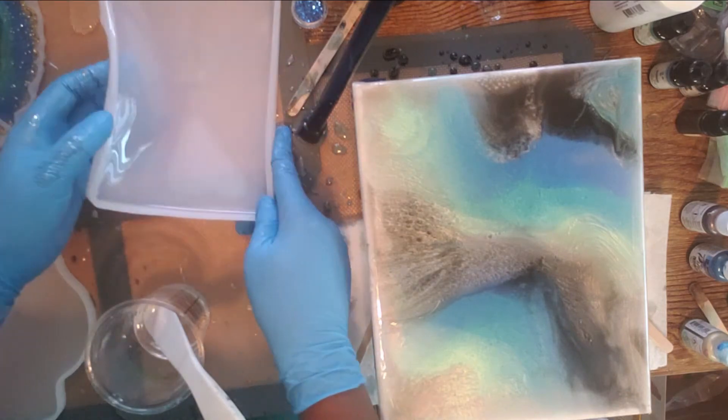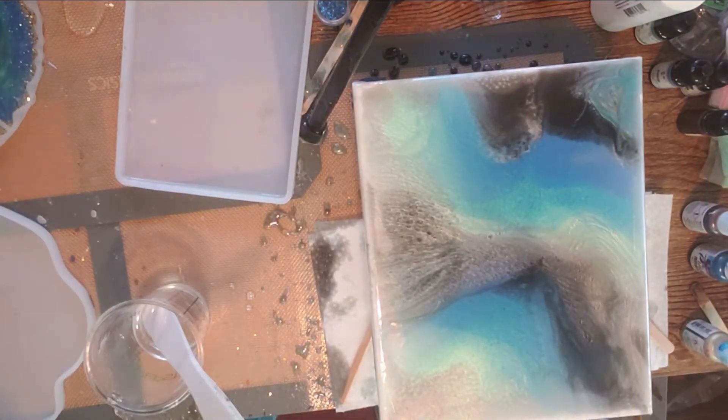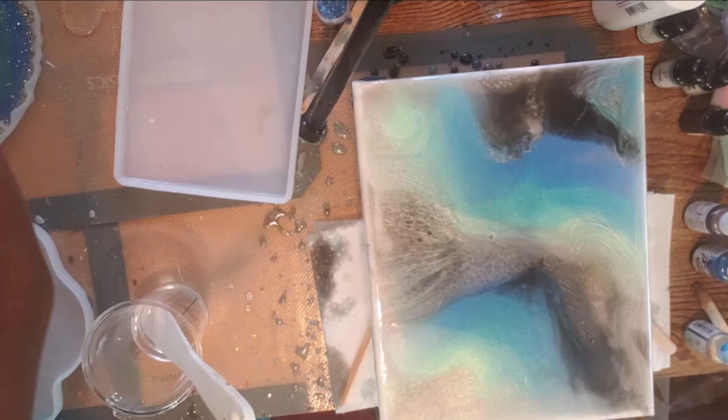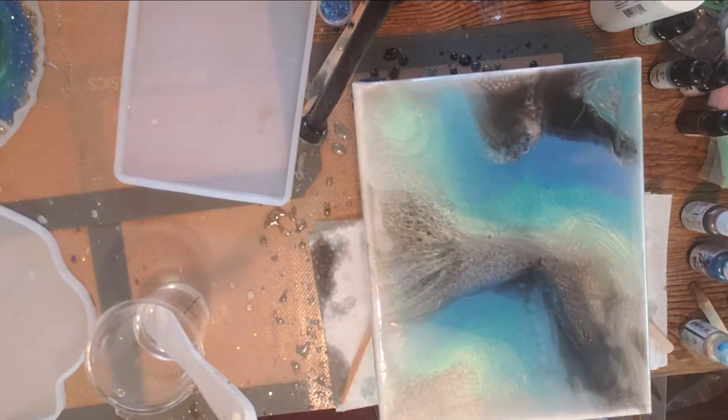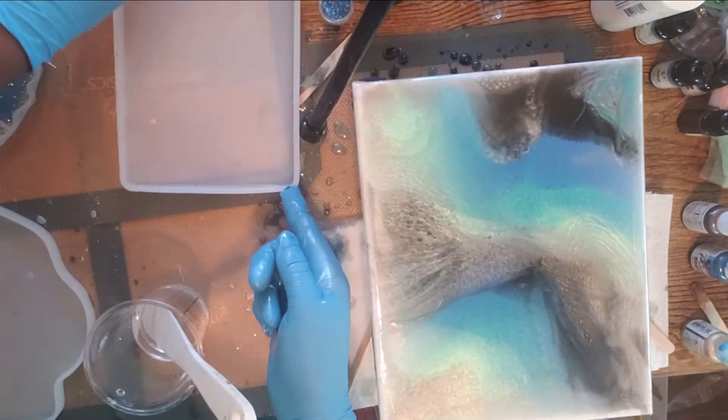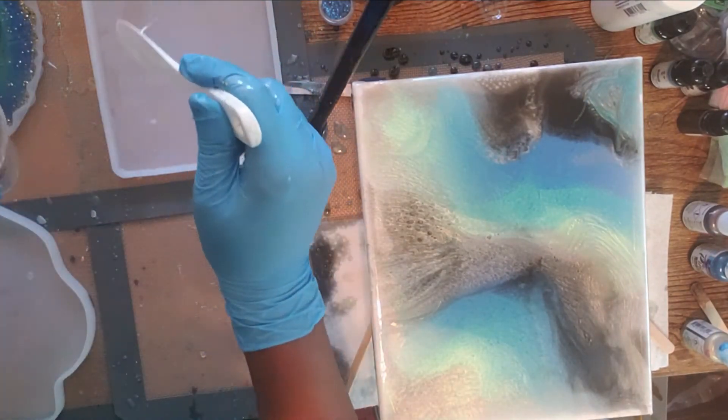All right, so in this mold, I just call them little displays. It's like a rectangle, I have a circle. I feel like I have another shape that I'm blanking on right now. So anyway, in this one, I just put a thin layer of resin and then made a mess that I cleaned up.